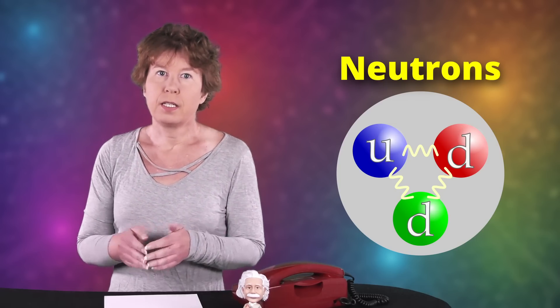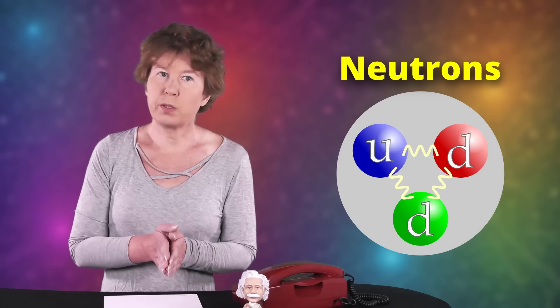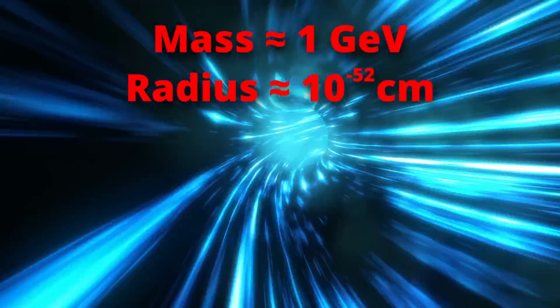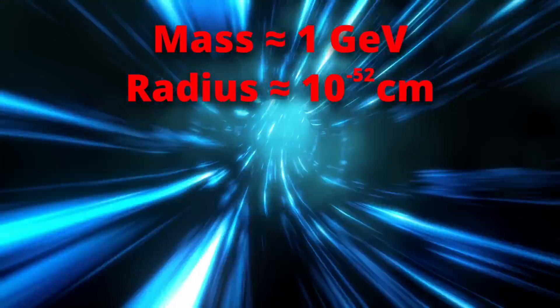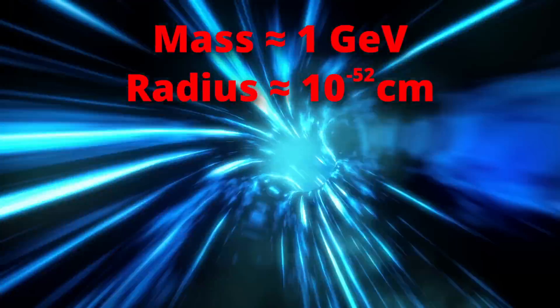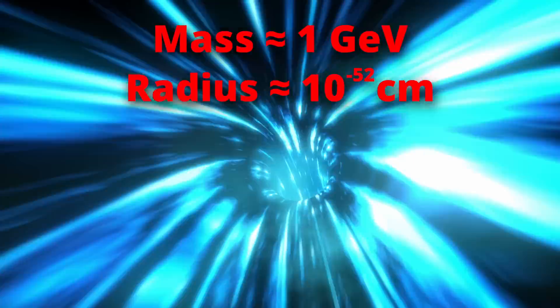They then go on to add electric charges and interpret that as charged particles. Now, one thing you may have noticed is that we know today that neutrons are not elementary particles. But this wasn't the main problem with the idea. The main problem is that one can calculate the size of the bridge or wormhole from its mass, and that'd tell you that the size of a neutron would be about 10 to the minus 52 centimeters.